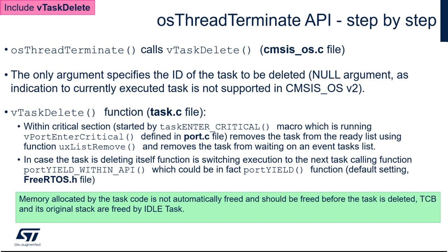vTaskDelete is defined within task.c in the FreeRTOS sources. Since deleting or removing a task is quite an important part of OS functionality, it needs to be done within a critical section. At the beginning of this function call, we enter the critical section using the macro taskENTER_CRITICAL, which blocks all relevant interrupts. The interrupts responsible for context switching would be blocked, and we operate on the BASEPRI mask register.